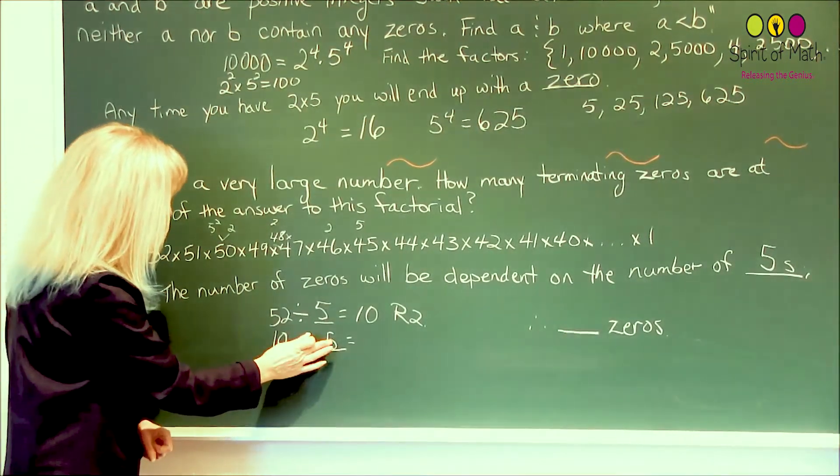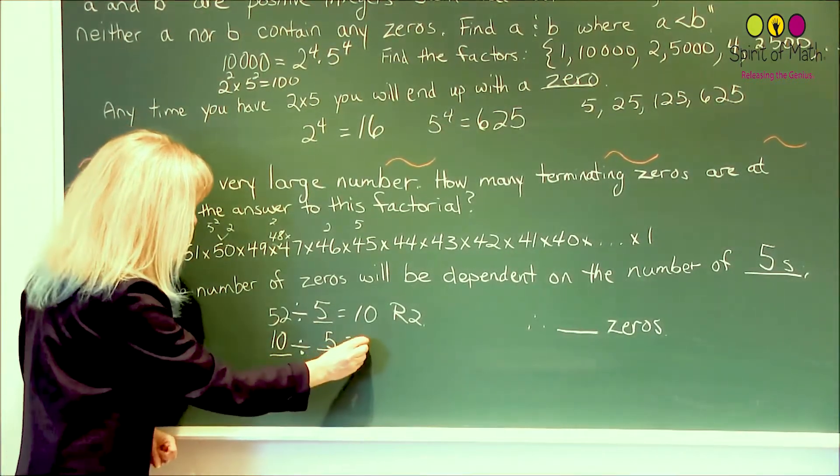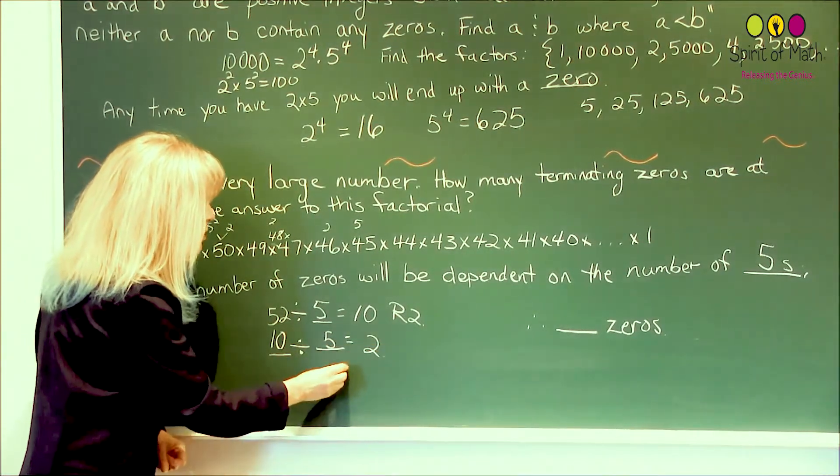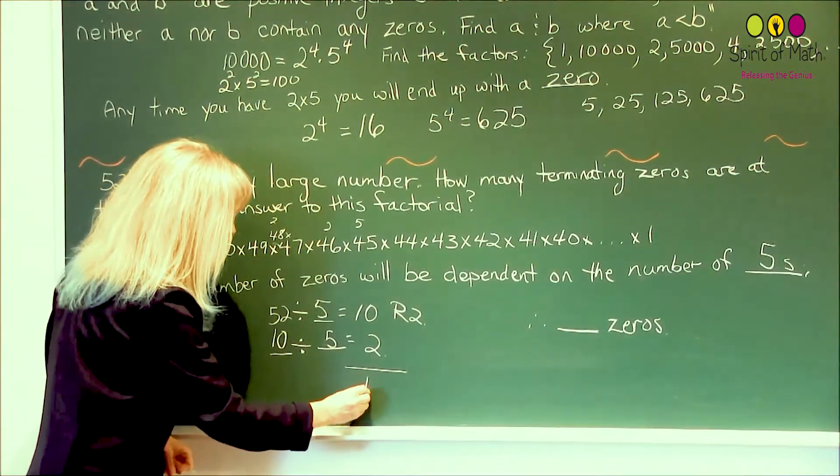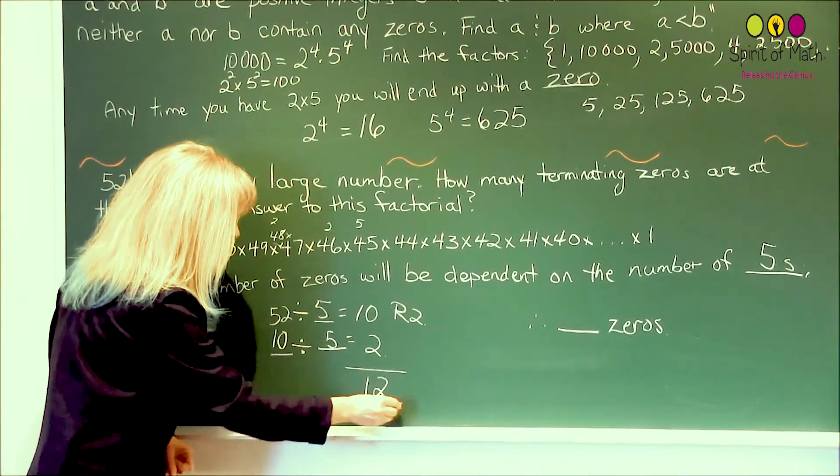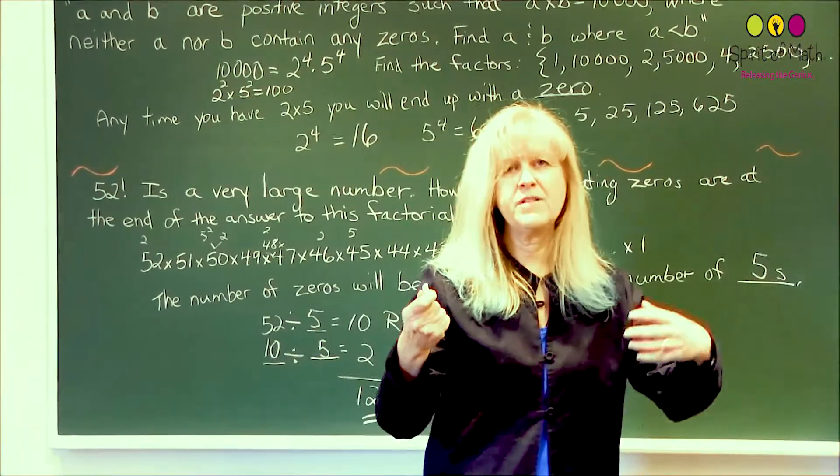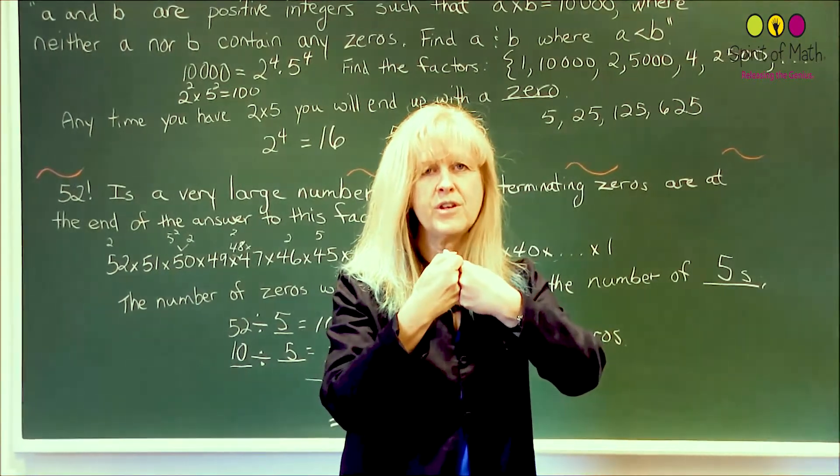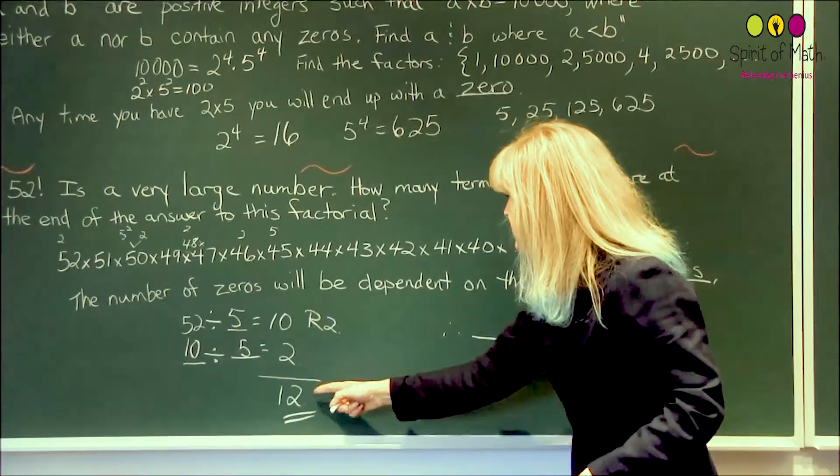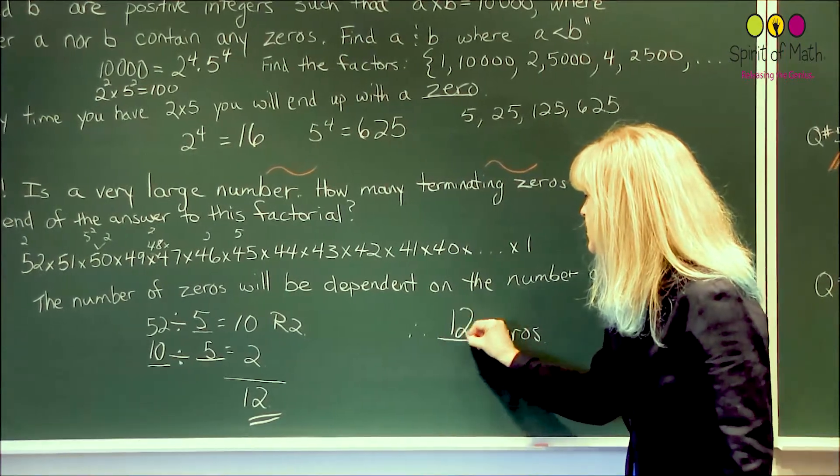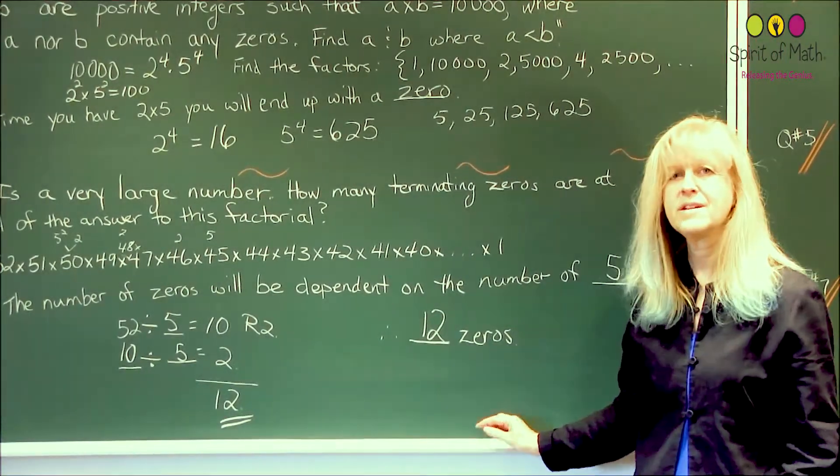So we divide by 5 again. 10 divided by 5 and end up with 2. So you have a total of 12. And that would mean that each of those 5s could pair up with a 2. So you could have a product of 5 times 2, 12 times, so there's going to be 12 zeros. And that's it.